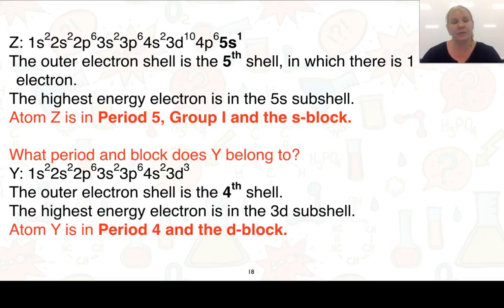We'll look at a second example here. Let's look at Z. The outer electron shell is our fifth shell because of 5s¹. There is 1 electron in that outer shell and it is an S. So we end up looking at it in period 5, group 1, and the S-block.